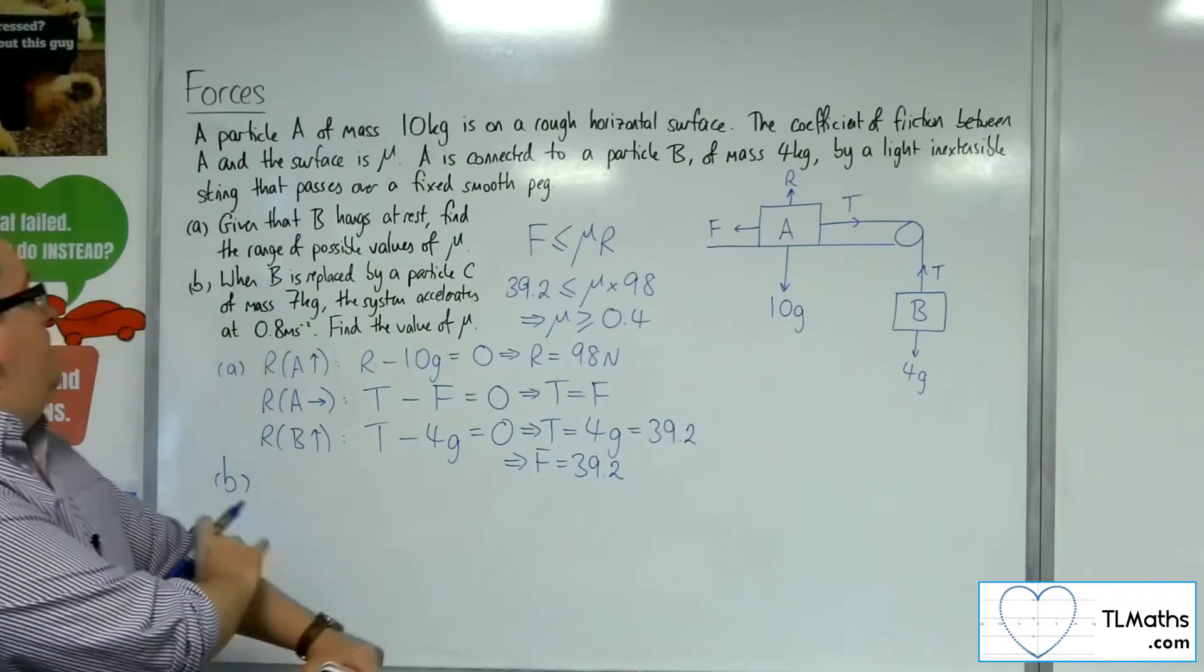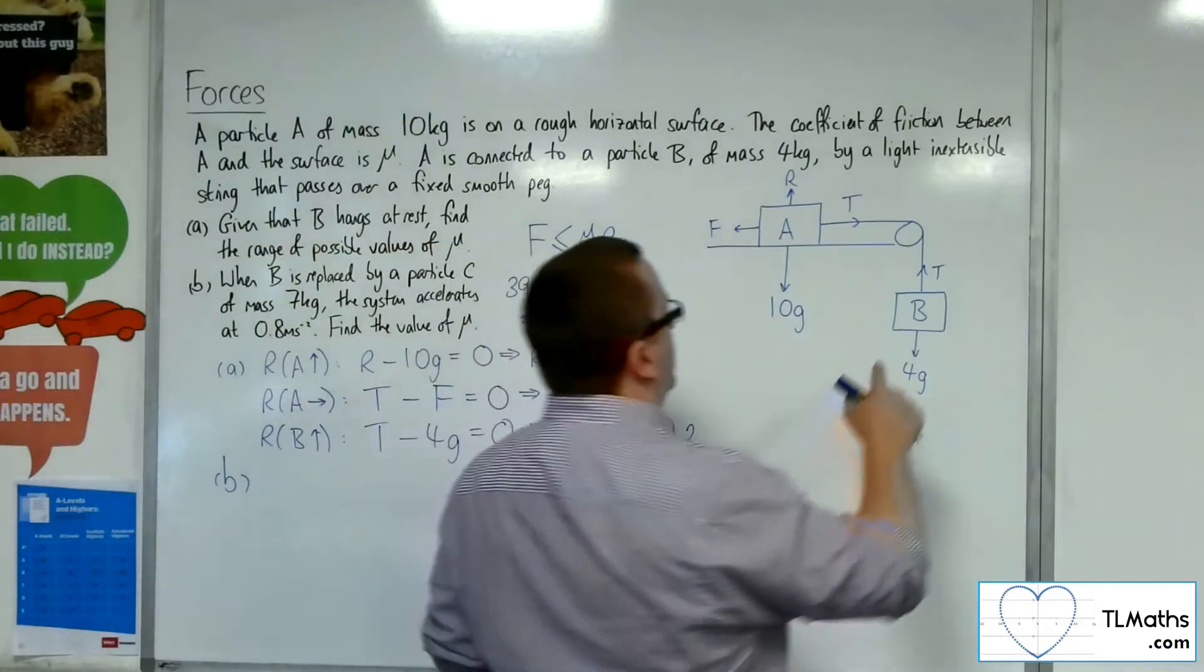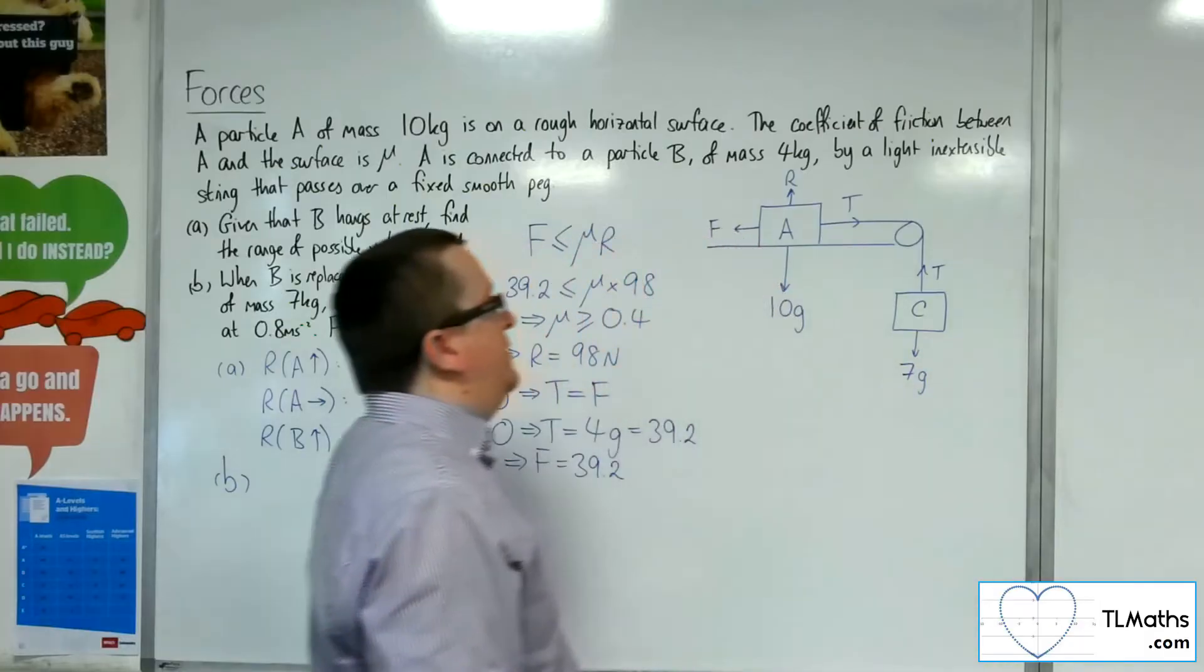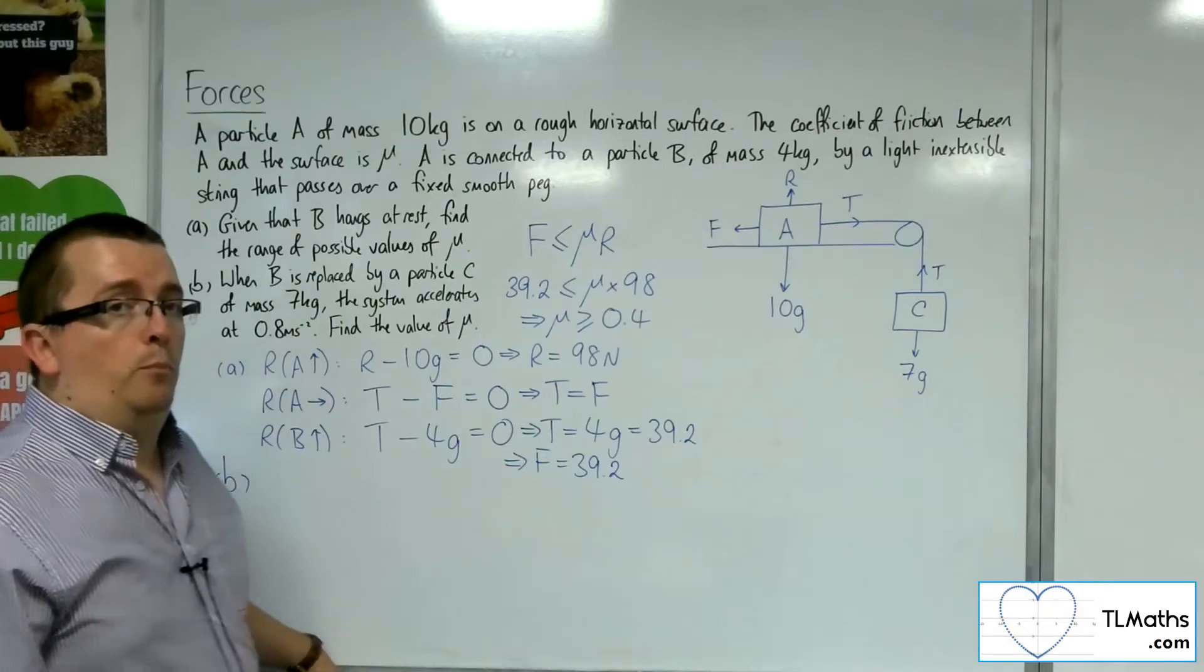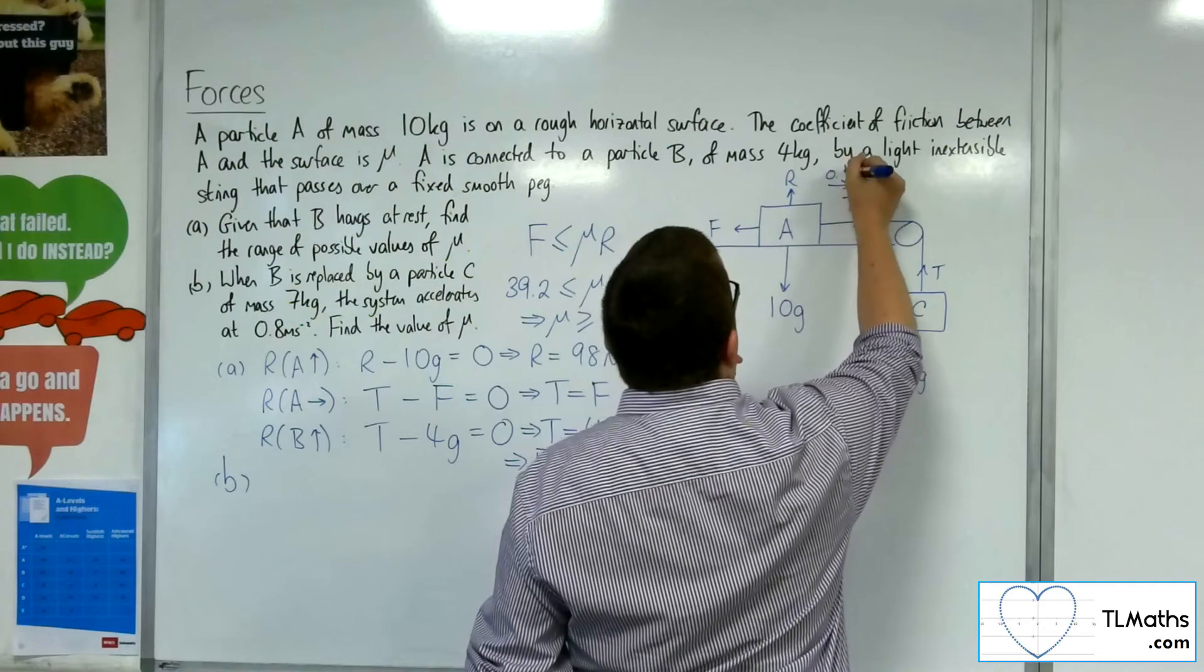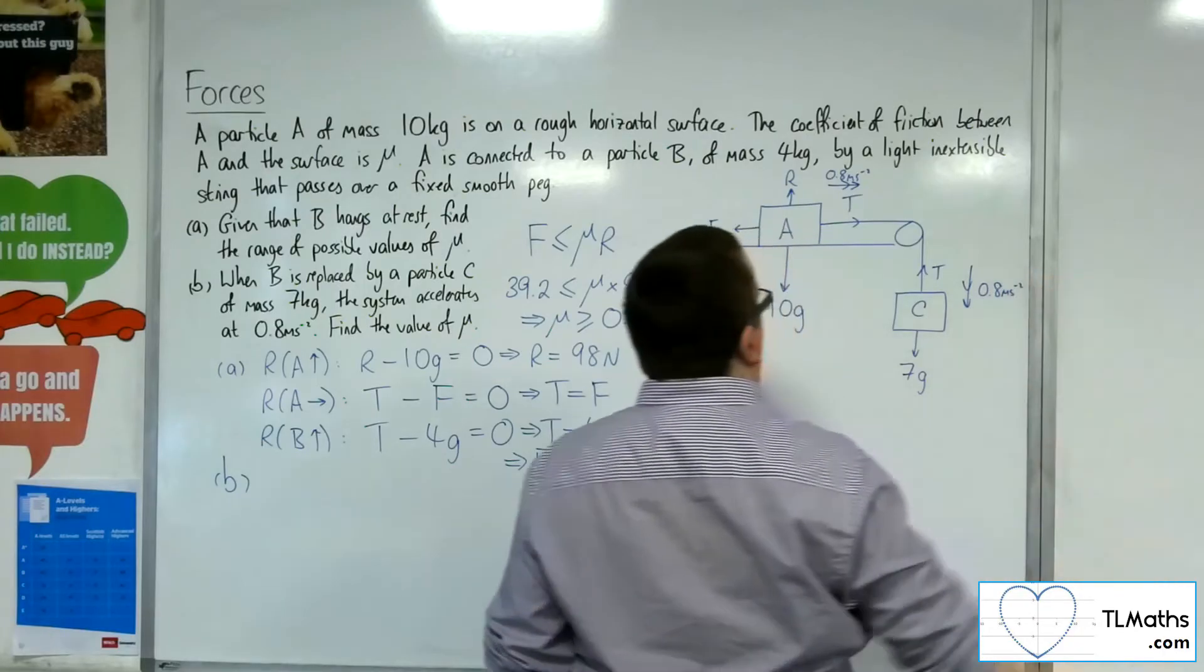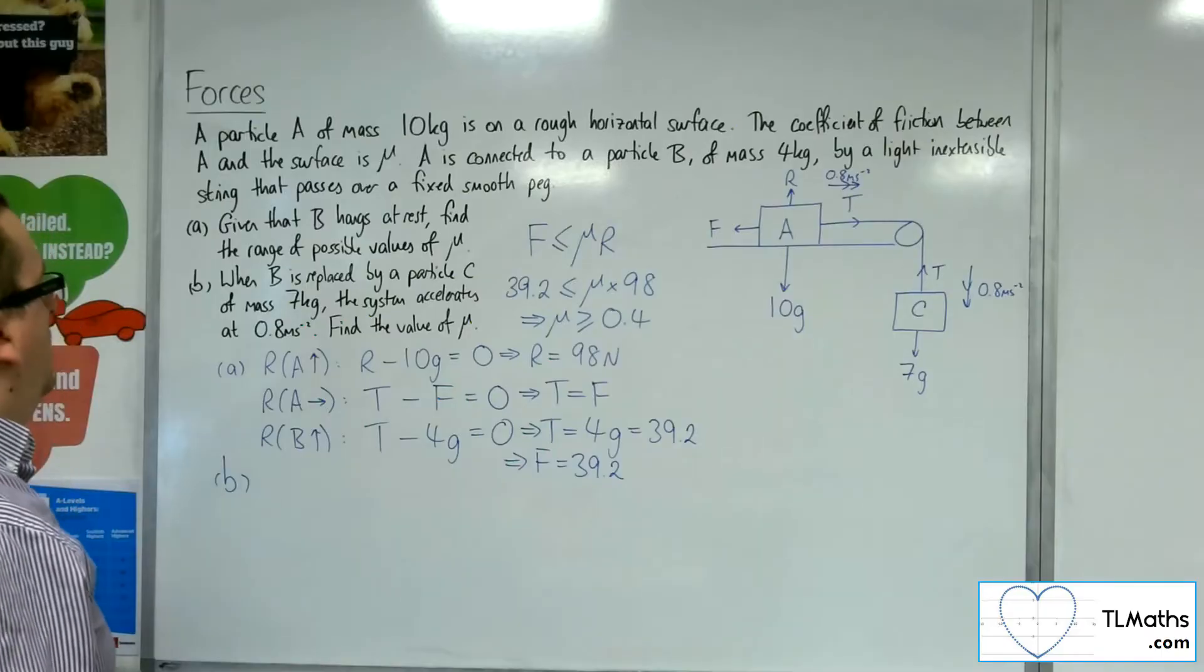Now, for B, what happens now is that B is replaced by a particle C of mass 7 kilos. So C has a weight of 7g. The system now accelerates at 0.8 metres per second per second. So we're accelerating at 0.8 metres per second per second. So this is what we now have.